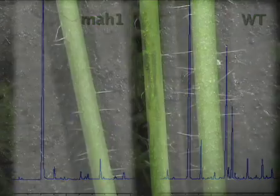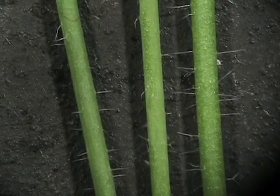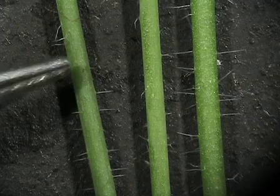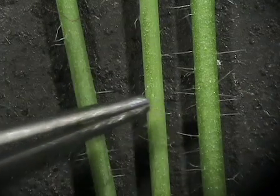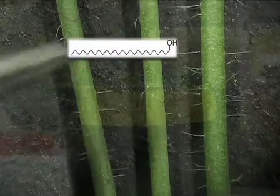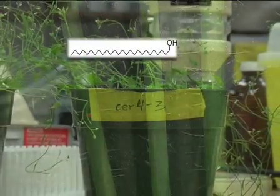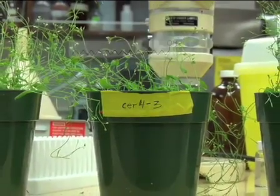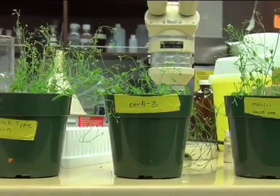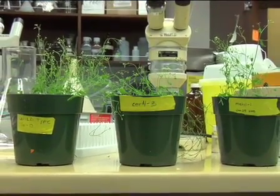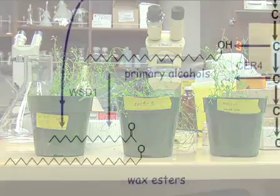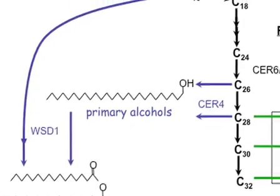These phenotypes can tell us a lot about the function of the gene of interest in the plant. For example, before we knew which gene was mutated in the CER4 line, the phenotype told us that there was a problem in the primary alcohol branch of the biosynthetic pathway. After the molecular identity of that gene was studied in the Kunst lab, it was discovered that it is part of gene family of fatty acyl reductases, which fits well with this chemical phenotype. We can now place these genes on the pathway, showing how the plant makes this component of the wax.